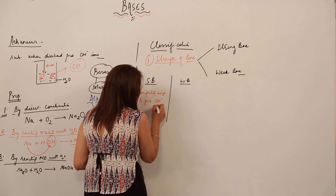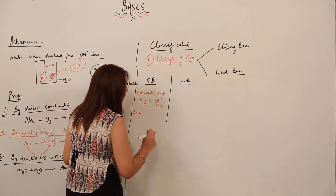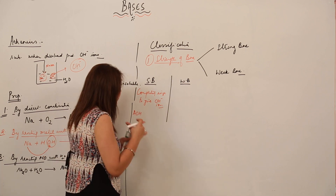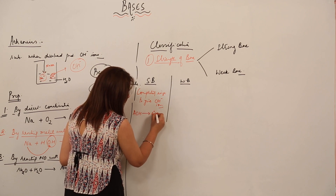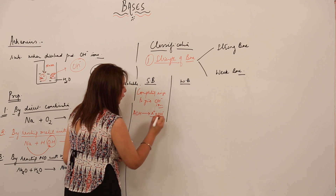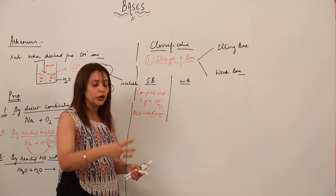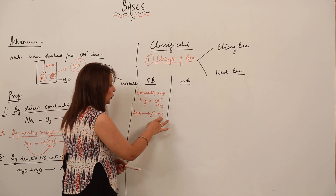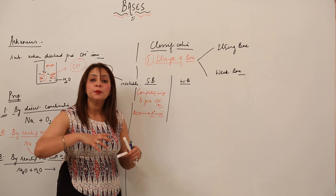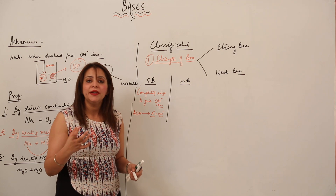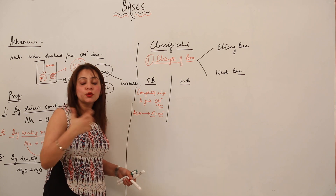For example, if AOH acts as a strong base, when it dissociates it will fully dissociate to produce A⁺ and OH⁻. In the whole solution, after dissolving AOH in water, you will only find A⁺ and OH⁻ — you won't find any AOH molecule because it has been completely dissociated. This indicates very high strength — it acts as a strong base.